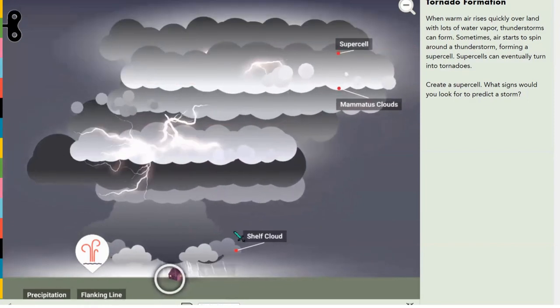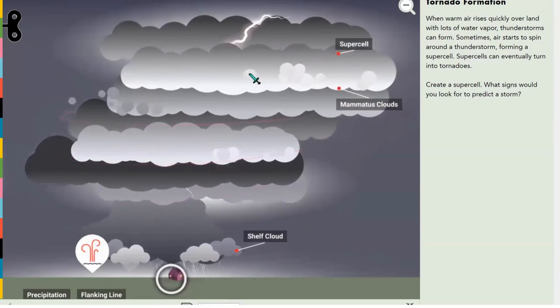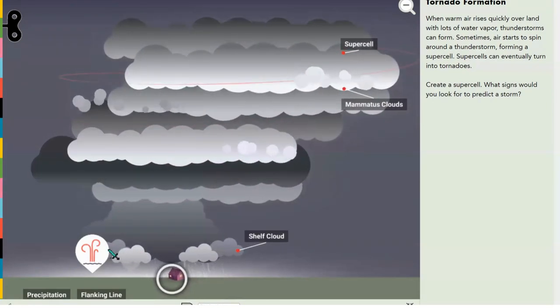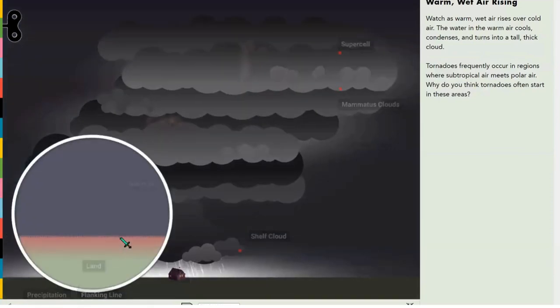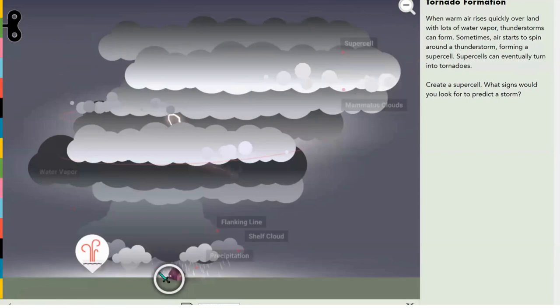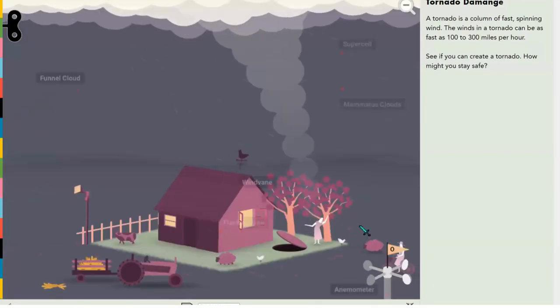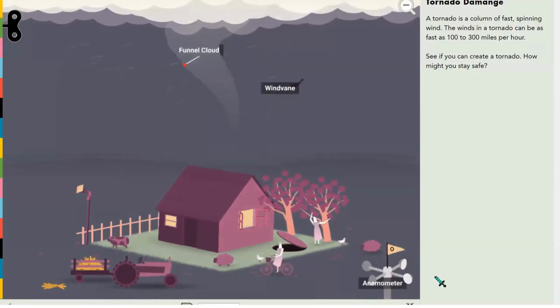And this is a supercell—tons of lightning. And oh my god, that's a ton, that's a lot of stuff. This is warm wet air rising, not just warm air, warm wet air. Now how much damage can tornadoes deal?